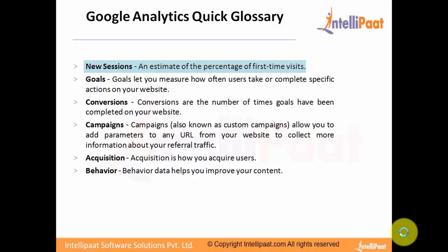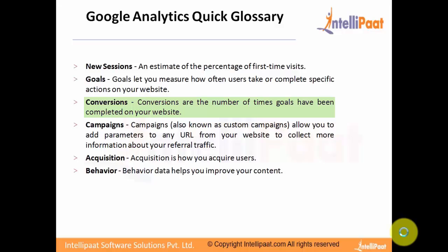New sessions is an estimate of the percentage of first-time visits. Goals let you measure how often users take or complete specific actions on your website. Conversions are the number of times goals have been completed on your website. Campaigns, also known as custom campaigns, allow you to add parameters to any URL from your website to collect more information about your referral traffic.